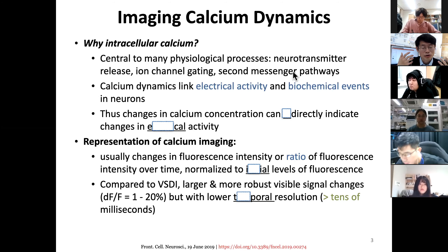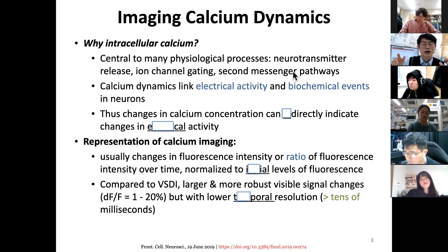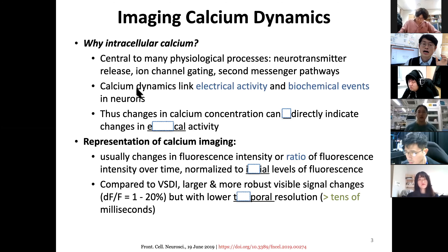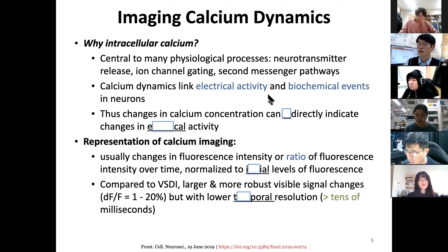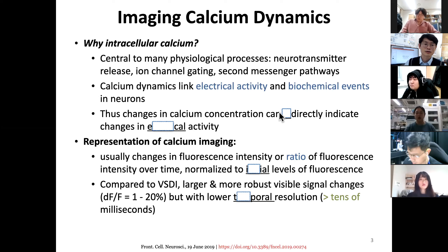Neuronal activity involves sub-threshold or action potential membrane potential changes and propagation from one neuron to the next, forming circuits that lead to behavioral changes. Calcium dynamics can link the electrical activity of neuronal firing to biochemical events in neurons such as neurotransmitter release and chemical synaptic transmission.